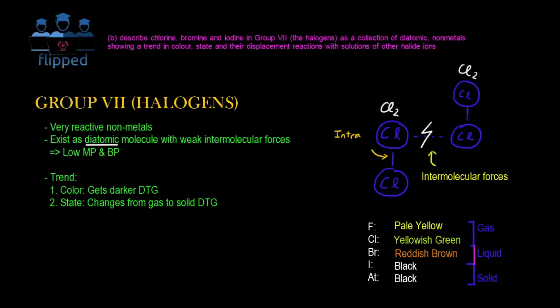Next is the trend. The trend for Group 7 is that number one, the color gets darker down the group. DTG means down the group. Secondly, the state changes from gas to solid down the group.